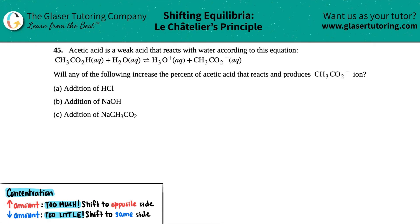Number 45: Acetic acid is a weak acid that reacts with water according to this equation. Will any of the following increase the percent of acetic acid that reacts and produces the acetate ion, CH3CO2 minus? Let me rewrite the balanced equation: CH3CO2H (aqueous) plus H2O (liquid) comes to equilibrium with H3O+ (aqueous) and CH3CO2 minus (aqueous).